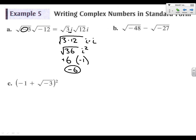Taking a look at b, let's take out our i's first. 48i minus the square root of 27i. All right, let's see if we can break down 48 and 27 at all. 48 is 16 times 3. 27 is 9 times 3. And so we can pull out some perfect squares, 4 root 3.